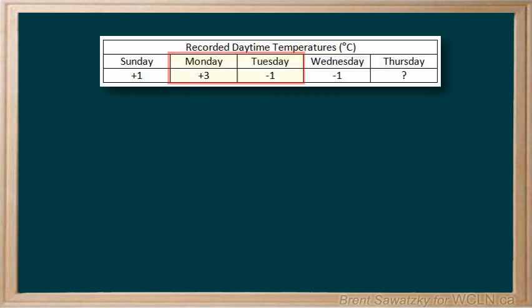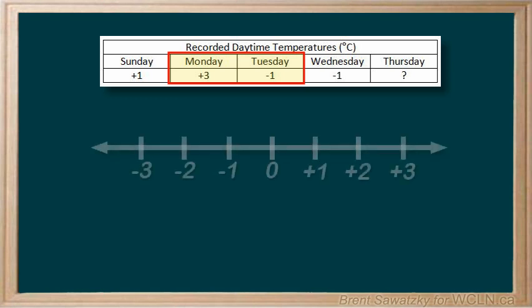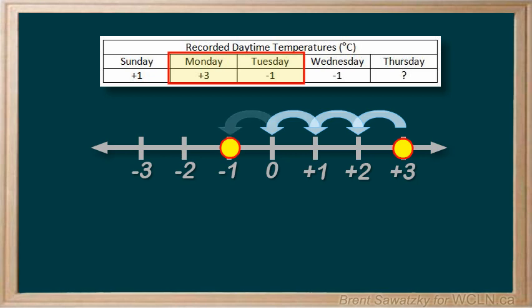Let's do Monday to Tuesday. A plus three degrees to a minus one. On a number line we're now going from plus three here, past zero and into the negatives. A one, two, three, four degree change in the negative direction, or a change of minus four degrees.